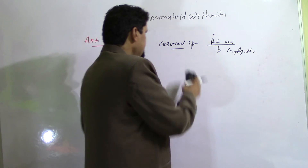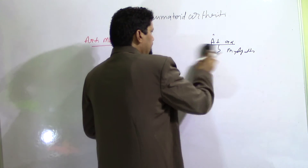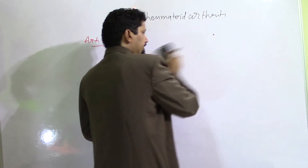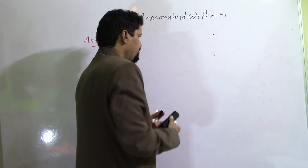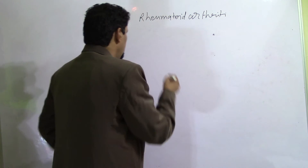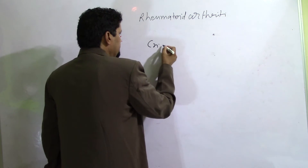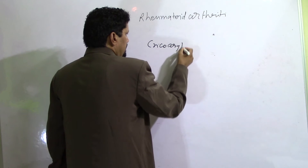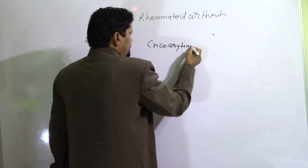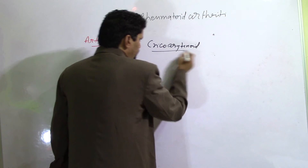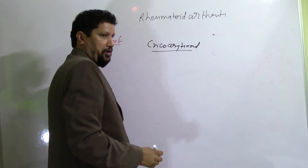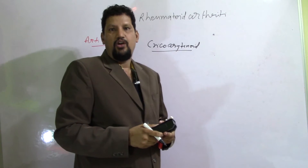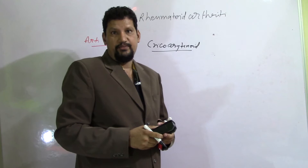Besides these joints, there will be involvement of the cricoarytenoid joint, which is a joint of the larynx. When the cricoarytenoid joint is involved, it leads to hoarseness of the voice.